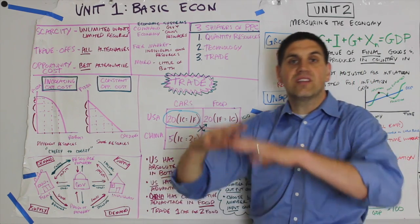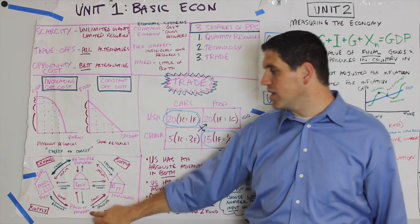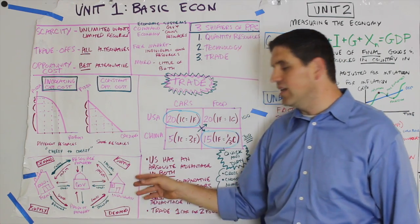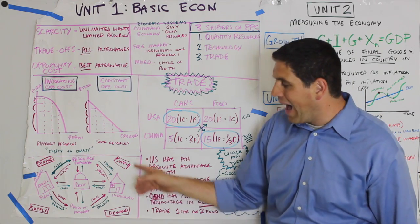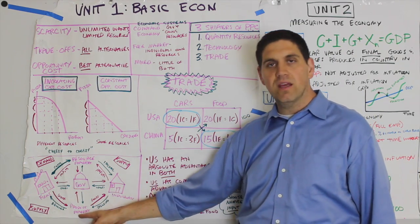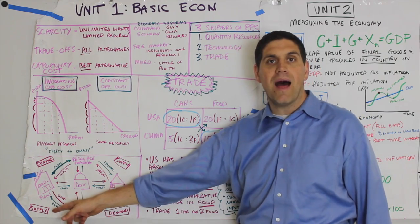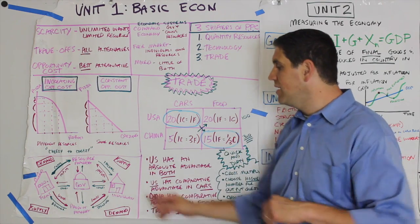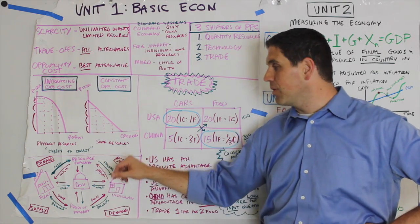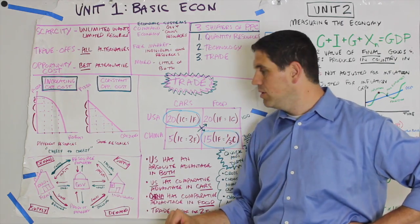Down here is the circular flow — the big picture of the entire economy. It has the product market and the resource market, with firms and individuals. Individuals buy goods and services from businesses in the product market, so individuals demand and businesses supply. But in the resource market, individuals supply their land, labor, and capital, and businesses demand that land, labor, and capital.